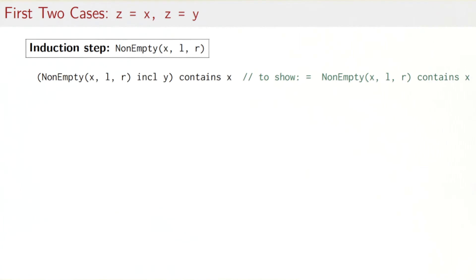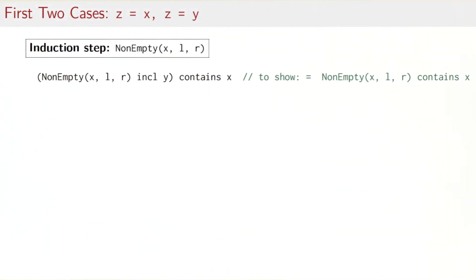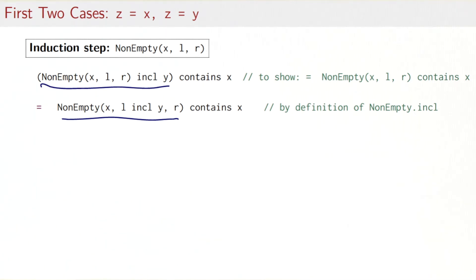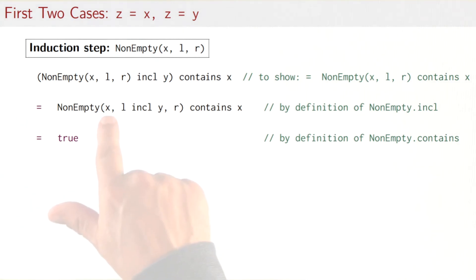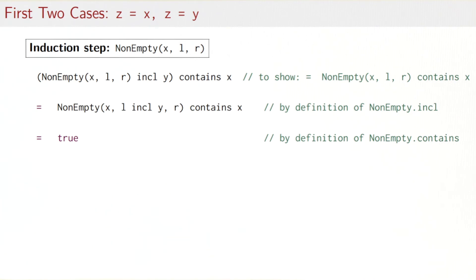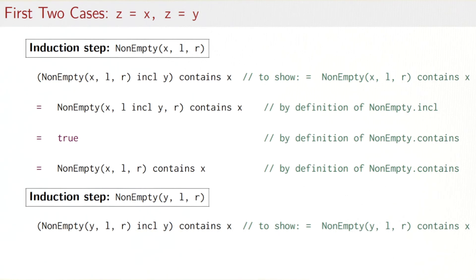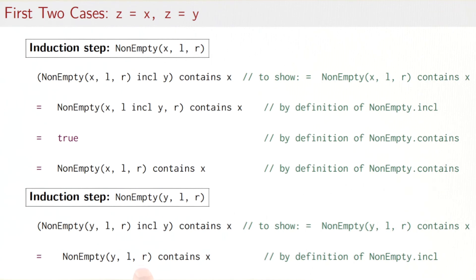The first two cases are easy. Case one: the root is X. Including Y into non-empty(X, L, R) — since Y is smaller than X — goes into the left subtree. Asking whether it contains X returns true because X is already at the root. Case two: the root is Y. Including Y into a tree that already has Y at the root leaves the tree unchanged. On the right-hand side, non-empty(Y, L, R).contains(X) is the same expression, so the equation is established.